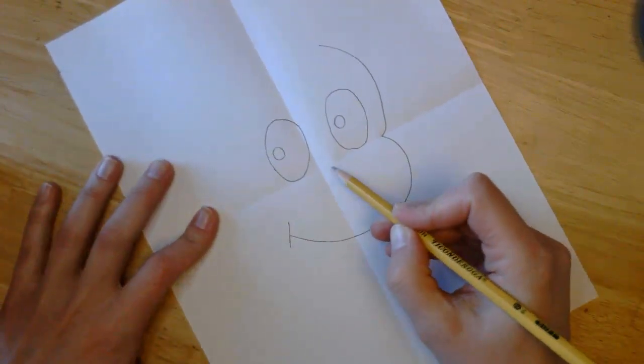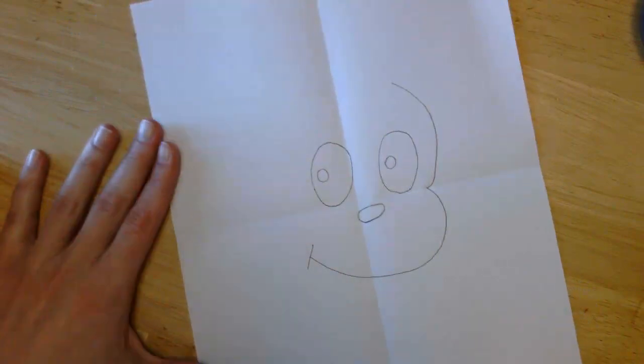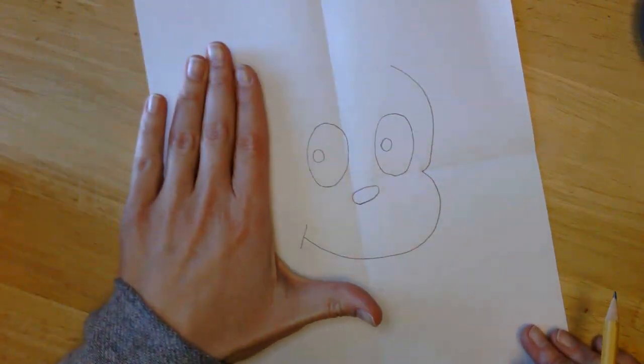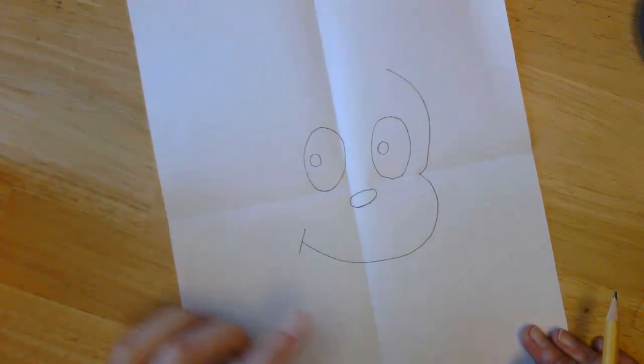Then, in the middle here, let's go ahead and draw his nose. Give him that oval nose. The next thing we're going to do, we're going to draw this side of his head. And it's going to be a straight line that's going to curve over and come down.